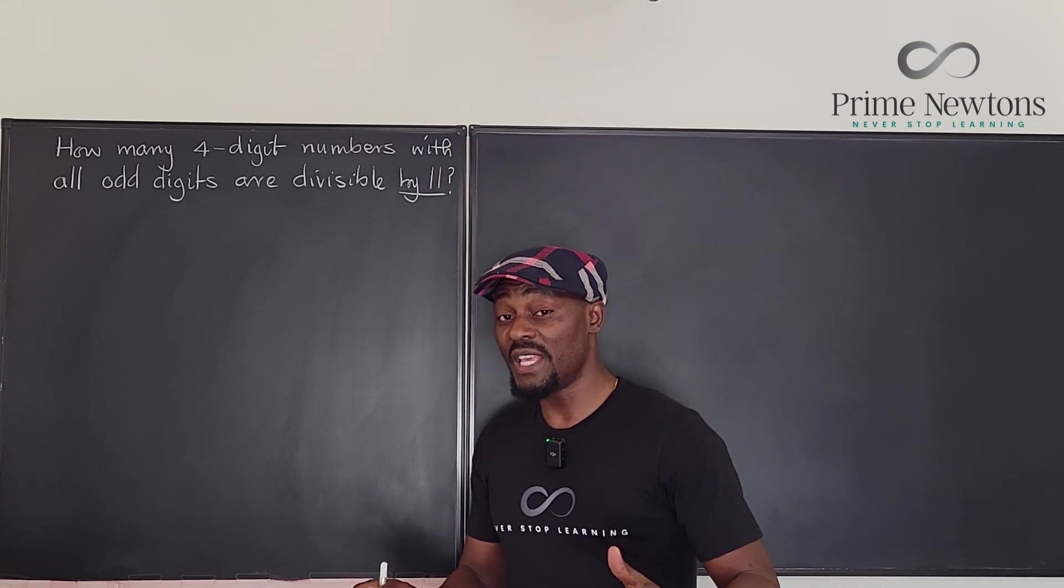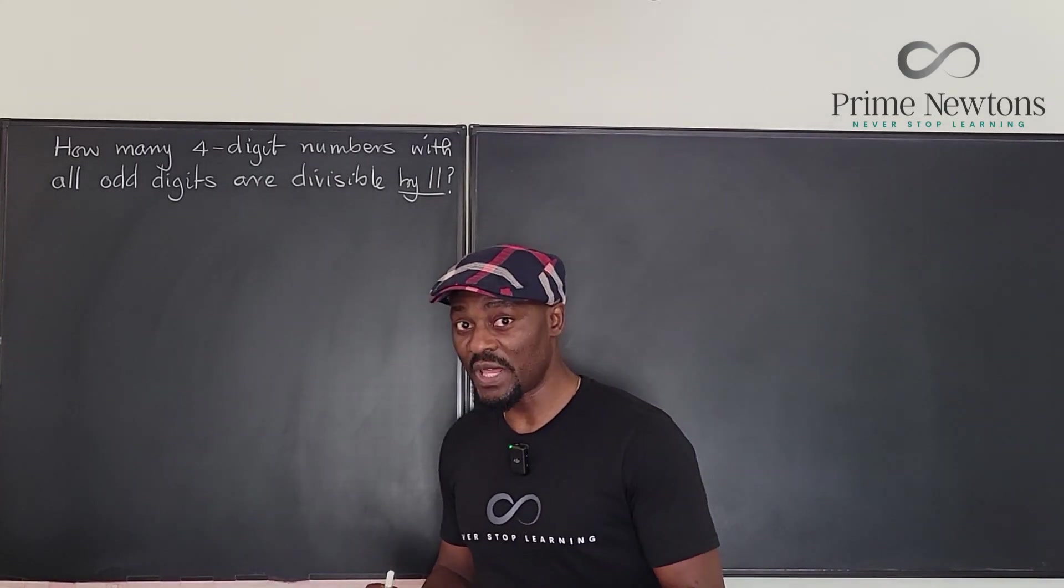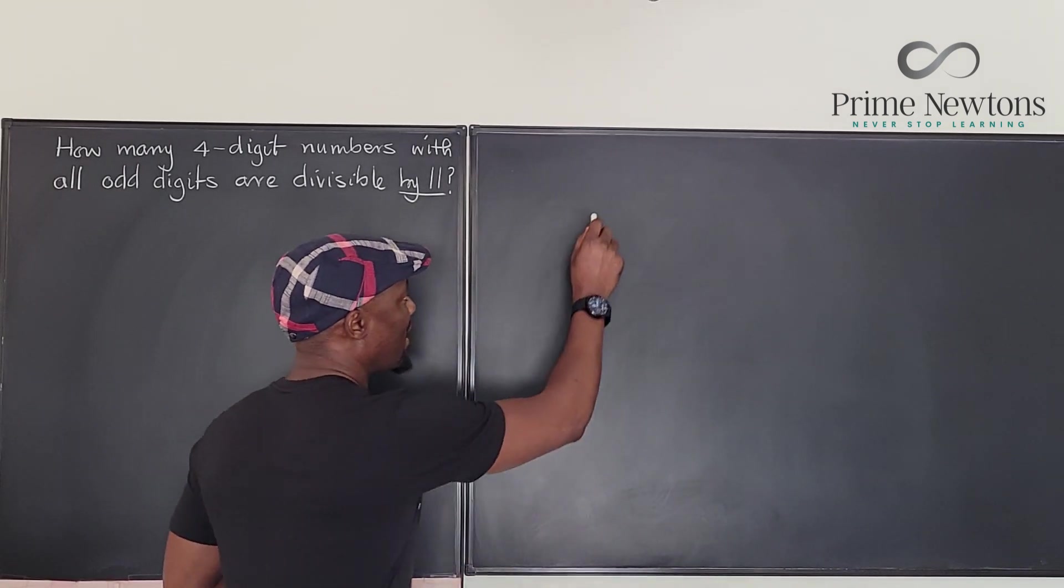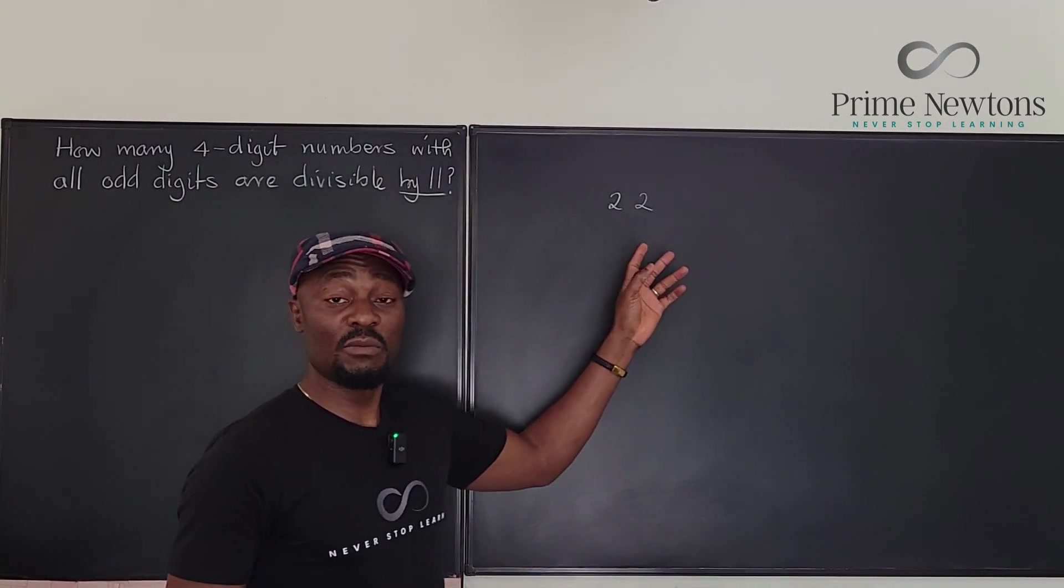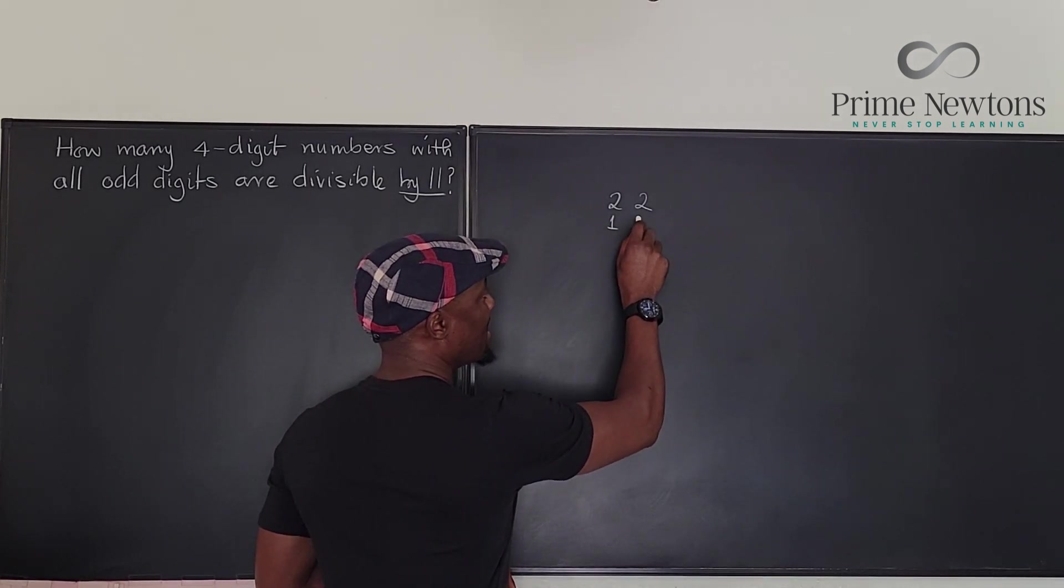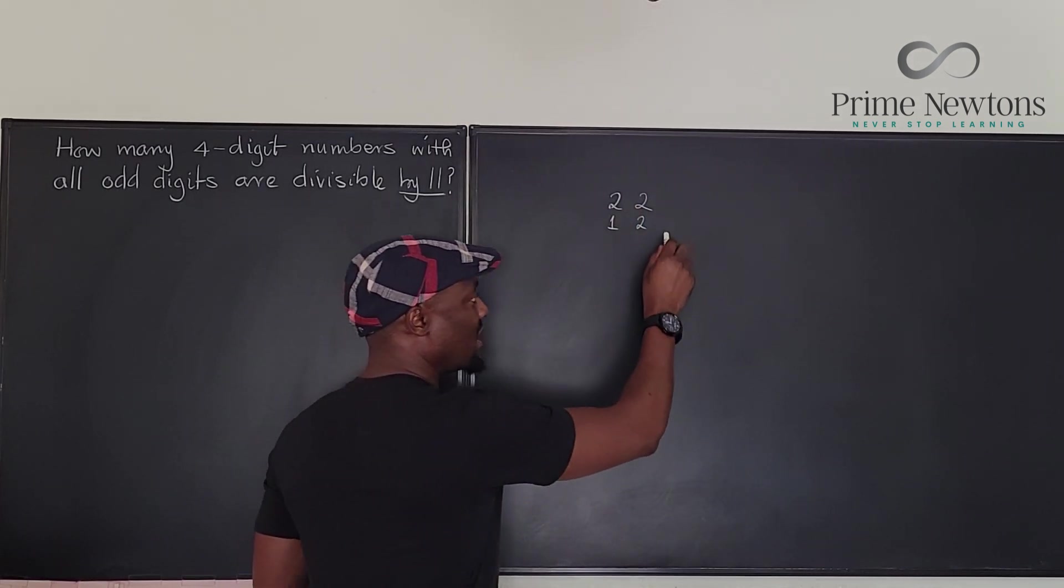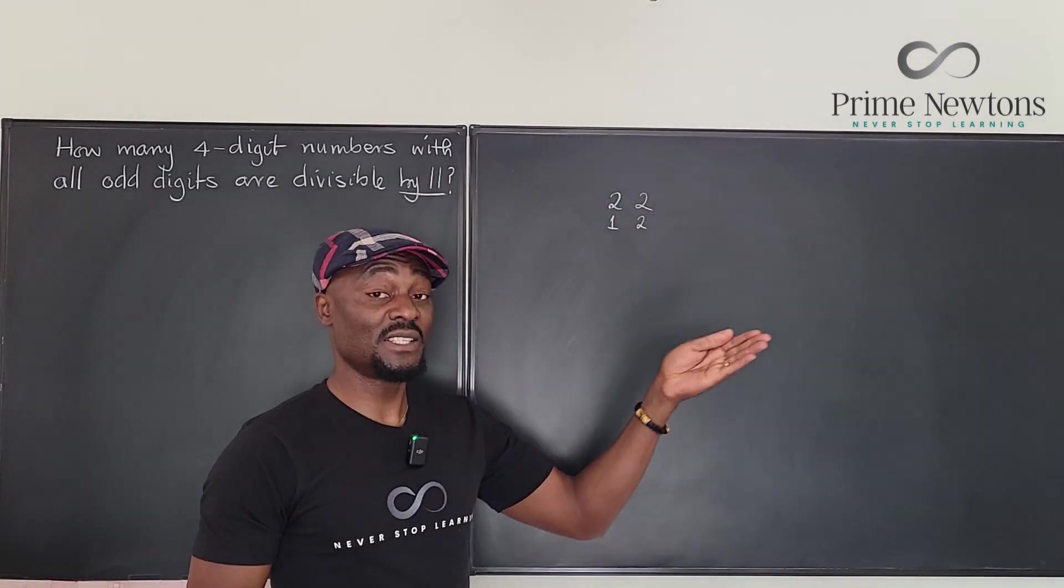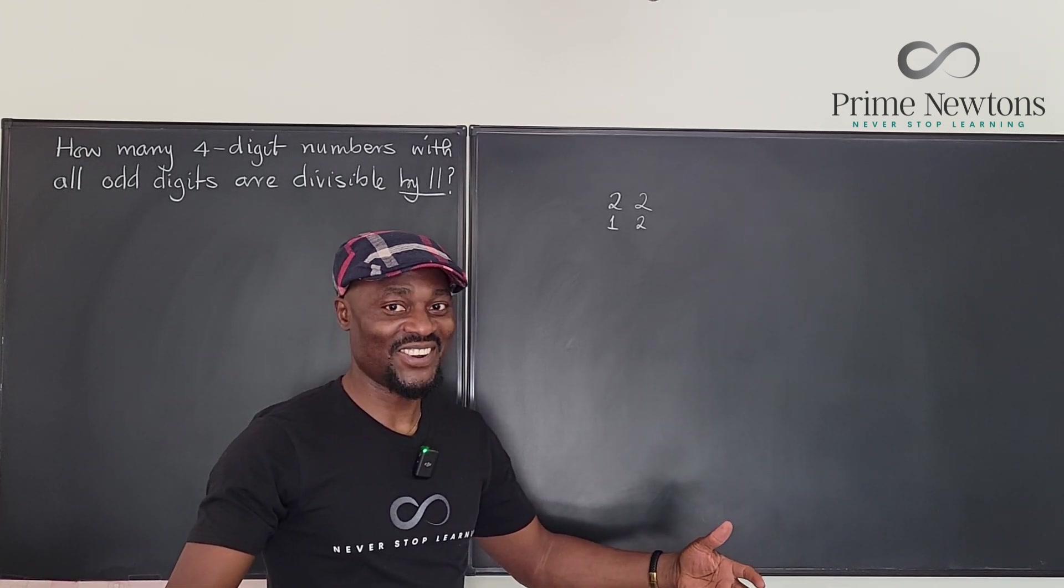The most important thing about numbers that are divisible by 11 is the rule that governs divisibility by 11. Let's just take some examples. Look at the number 22. The number 22 is obviously divisible by 11 and this is the reason. This is in the first position, this is in the second position. The difference between these two numbers is 0, and 0 is a multiple of 11 because you can divide 0 by 11 without a remainder.